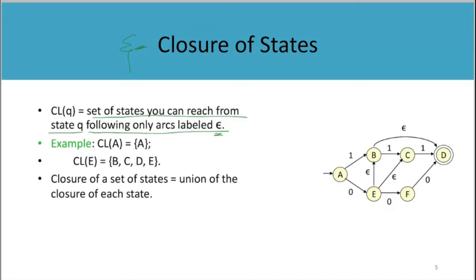For example, CL of A equals only A, because if you are on A without giving anything, by giving epsilon, you can only be there on A. You can't go anywhere by giving epsilon. But if you think CL of E, this state E, if you give epsilon, by giving epsilon you can go to B, you can go to C.